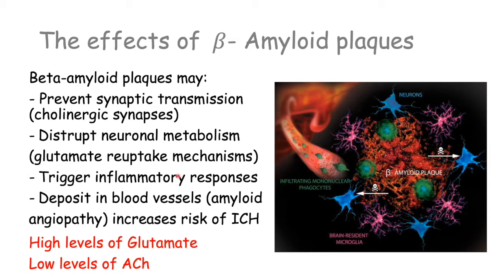There's also a disruption in neuronal metabolism — for example, of the glutamate reuptake mechanisms that involve the brain's resident microglia. The glial cells, in particular the astrocytes next to neurons — if the glutamate cannot be reuptaken, it stays in the synaptic cleft longer. You essentially have higher levels of glutamate, leading to glutamate excitotoxicity of the neuron, meaning too much excitation, which will lead to cell death.